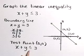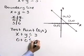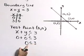So in this statement, substituting X equals 0 and Y equals 0, is that indeed less than or equal to 3? Yes, it is. 0 is less than or equal to 3.